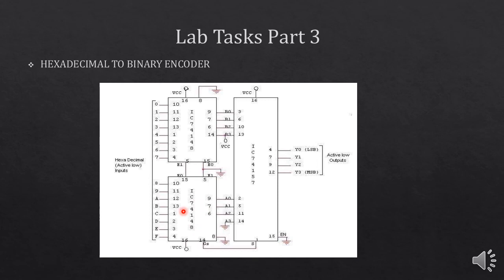The enable pins are connected such that for the first 7 inputs, the first encoder is on, and for the next inputs, the second encoder is on. You have to implement this circuit on Proteus and verify your results. The 74157 IC is also working on active low logic for the outputs, so to glow the LEDs, you have to connect the cathode of the LED to the output and apply VCC at the anode, as discussed in the previous task.